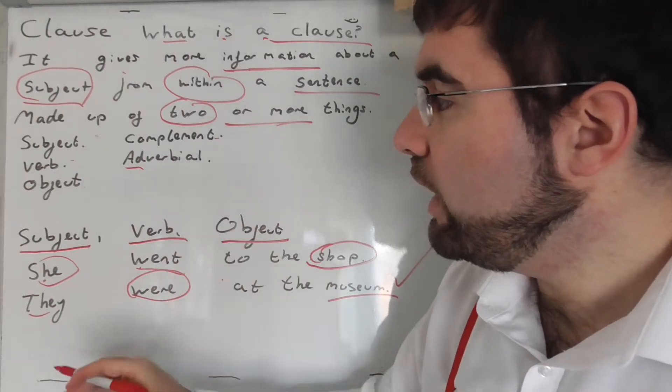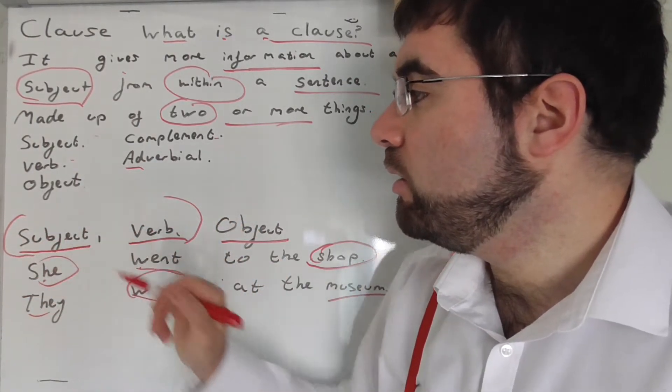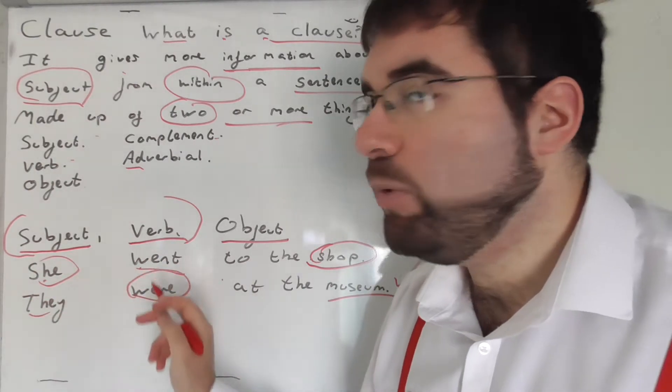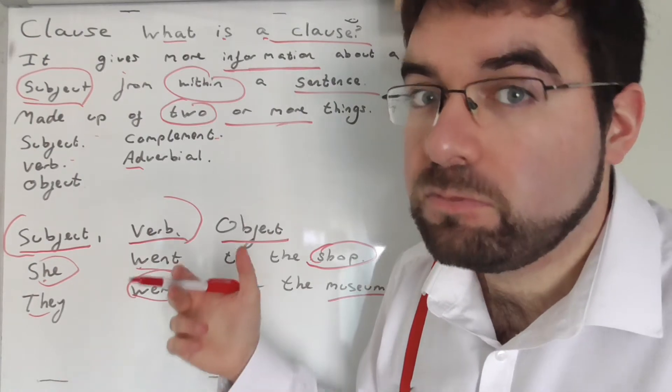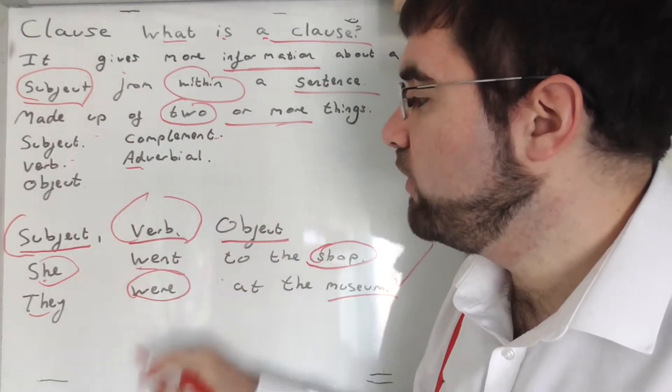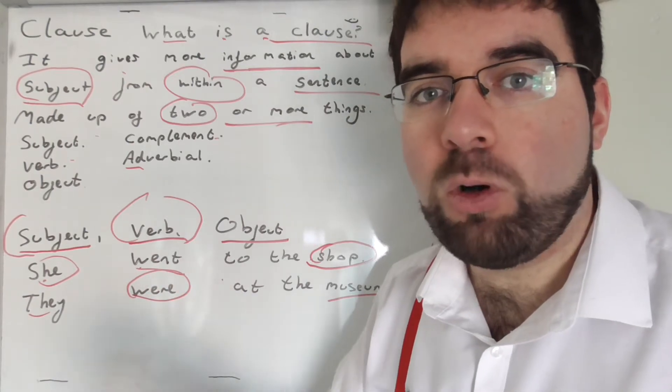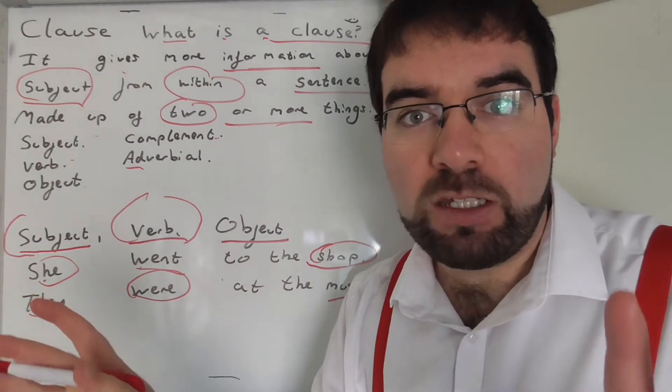Nice and clear. Now, even a clause could really just be a subject and a verb. She went, she came, they were, they aren't. Very good. But even then, a clause could just be a verb. Go, run, climb, walk, talk, learn, watch, listen. Very nice.